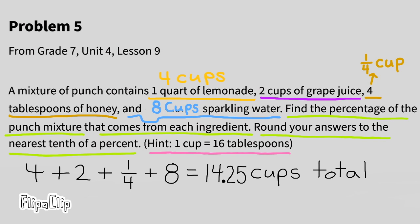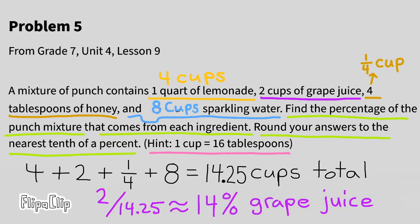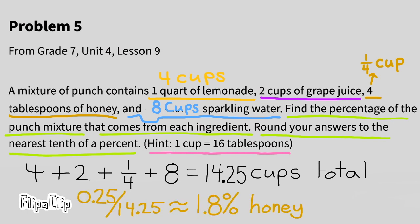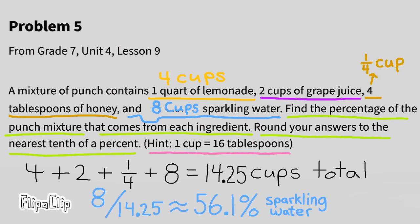Four cups of lemonade out of 14.25 cups is approximately 28.1% lemonade. Two cups of grape juice divided by 14.25 is approximately 14% grape juice. A quarter cup of honey divided by 14.25 is approximately 1.8% honey. Eight cups of sparkling water divided by 14.25 is approximately 56.1% sparkling water.